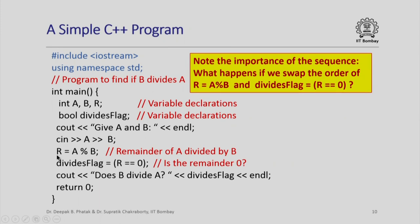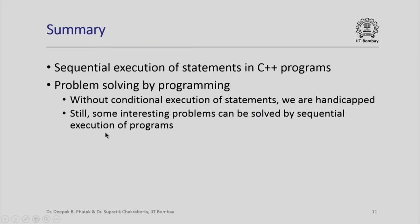An important thing to note is the sequence in which these two instructions appear: r = a % b comes before divides_flag = (r == 0). It is an interesting question to ask what would happen if we swapped the order. If the assignment to divides_flag appeared before r is assigned a % b, then the value of r used would be a garbage value from the memory locations for r — which is not what we want. Therefore the sequencing of these instructions is very important.